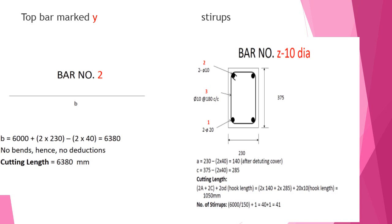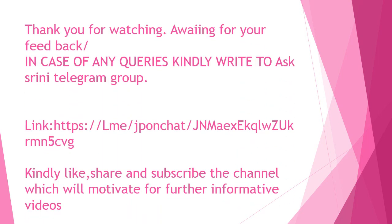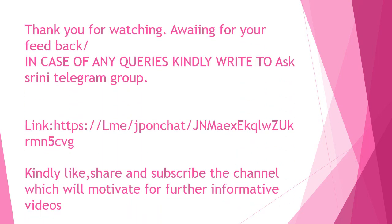Number of stirrups shall be 6000 divided by 150, equal to 41. Hope you enjoyed this presentation. I would like to receive your feedback. Thank you very much.